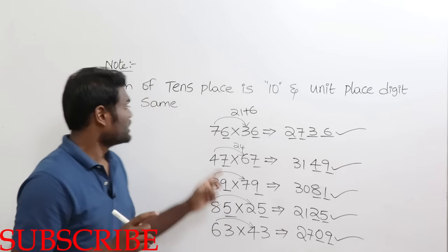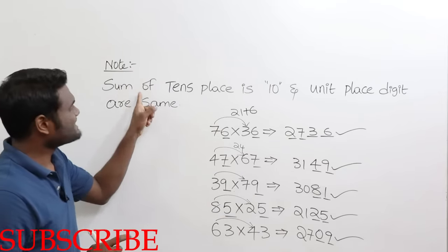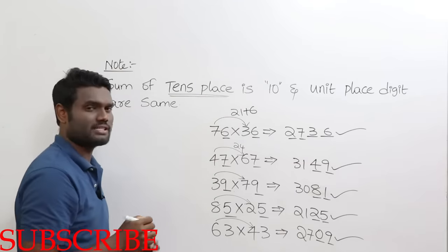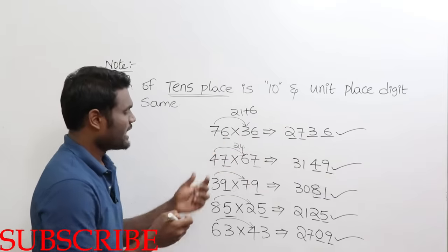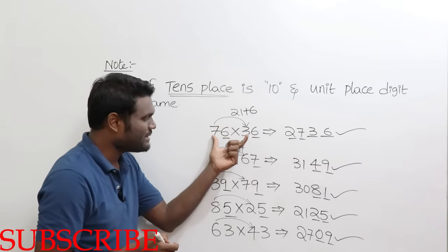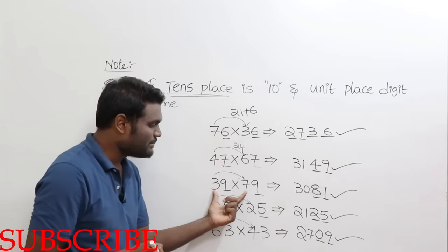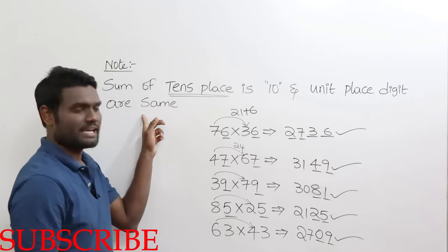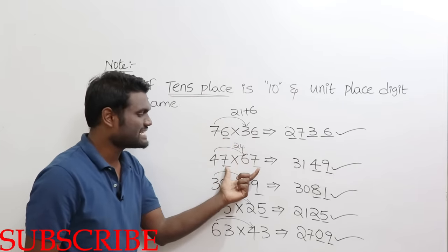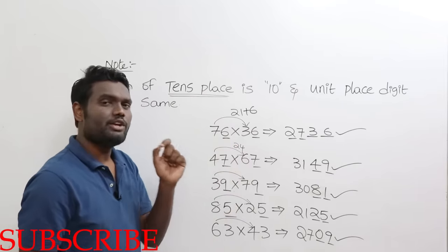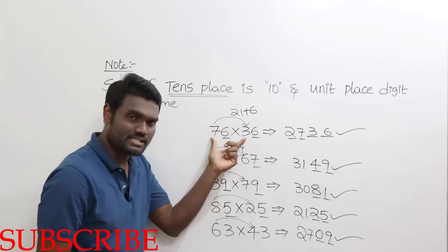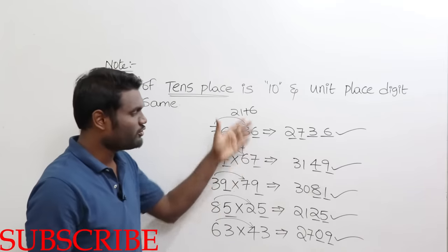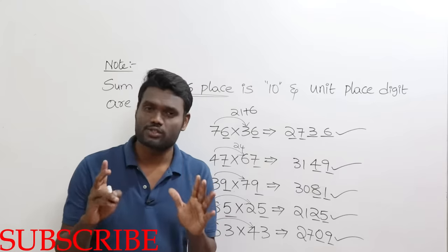When to apply this rule: the sum of the tens-place digits must equal 10. In the previous technique, the sum of the units place was 10; here, the sum of the tens place is 10 — for example, 7+3=10, 4+6=10, 3+7=10. Additionally, the units-place digits must be the same: 6 is 6, 7 is 7. When the sum of tens-place digits is 10 and the units-place digits are the same, you can apply this logic and get the answer in just a fraction of seconds.